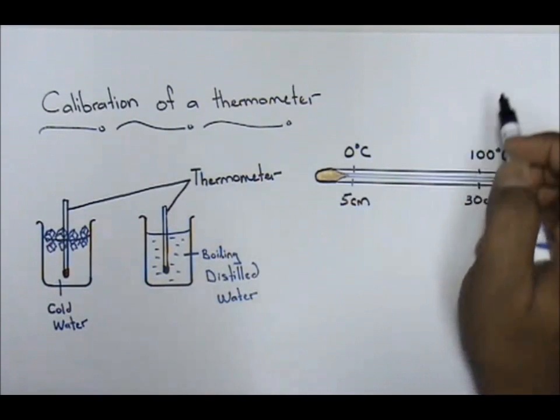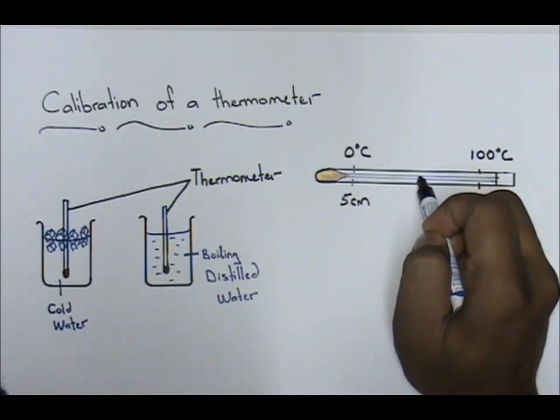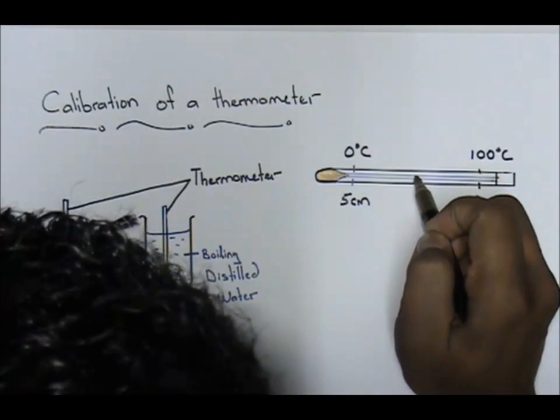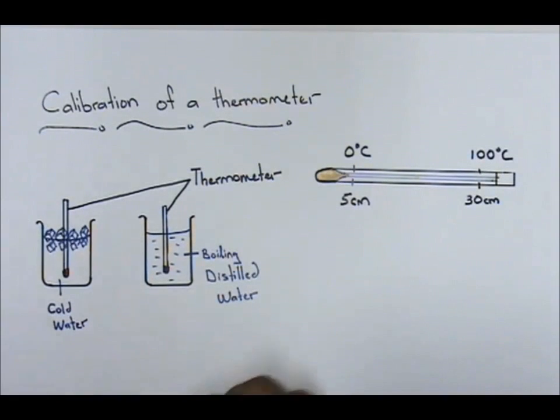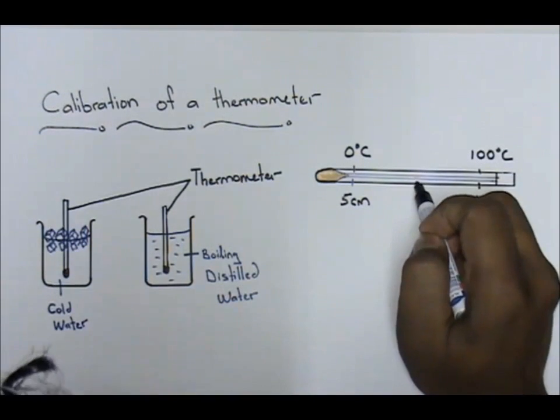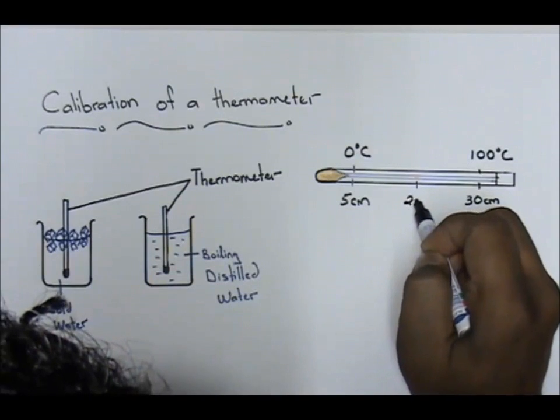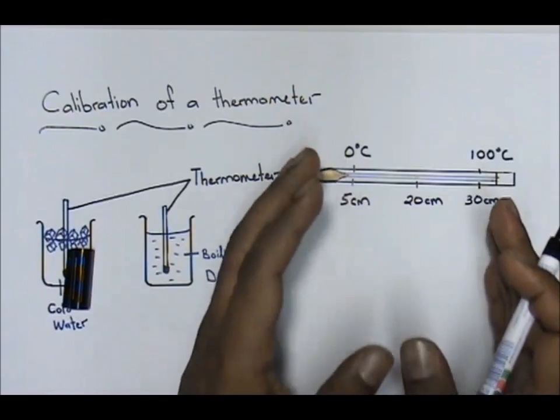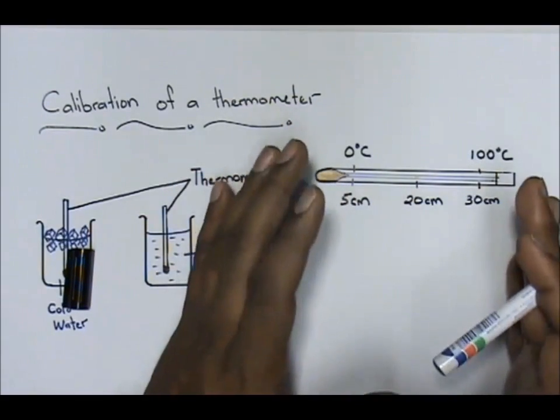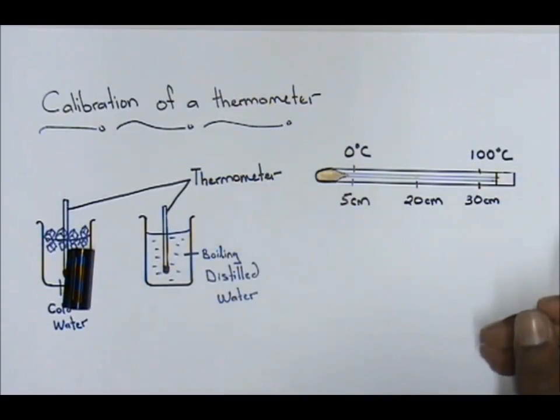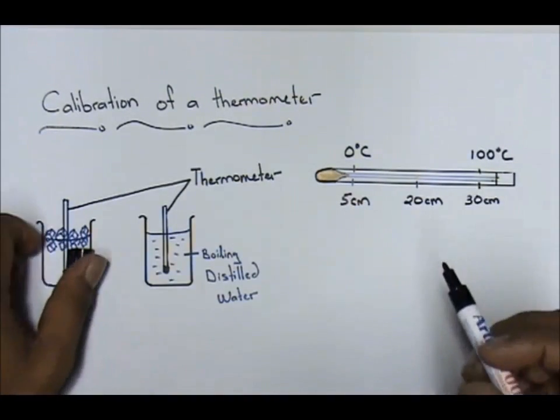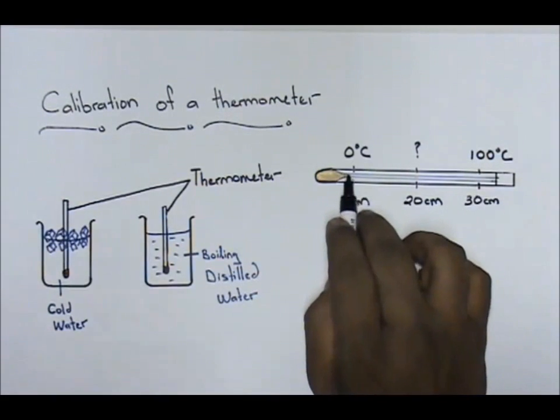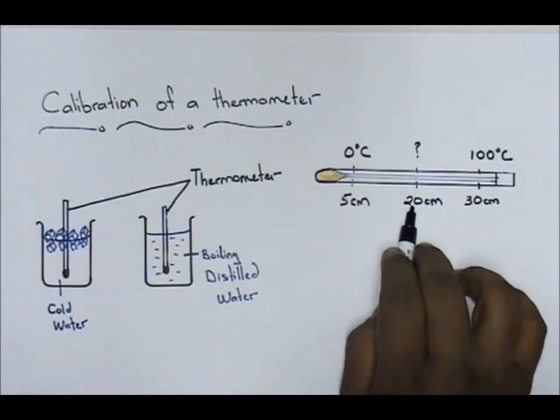Now let me just give you a sample of an SPM question. Let's just say I am telling you that the mercury rose up here to a point, and this point here I'm going to label as 20 centimeters. So the question is, what is the temperature when your mercury rises to 20 centimeters?